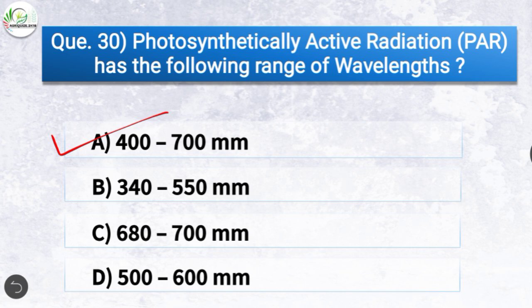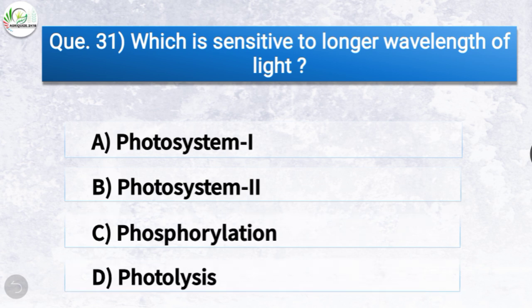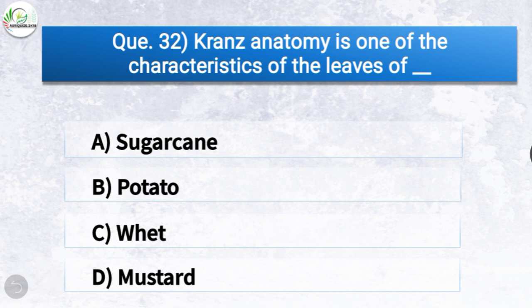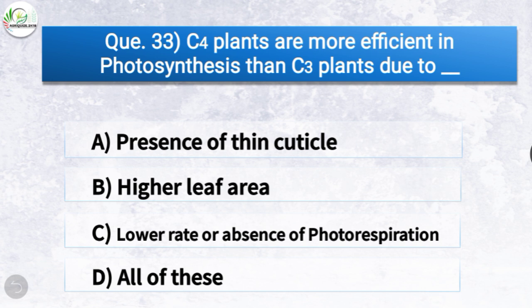Question 31: Which is sensitive to longer wavelength of light? Options: photosystem 1, photosystem 2, phosphorylation, or photolysis. The correct answer is option A — photosystem 1. Question 32: Kranz anatomy is one of the characteristics of the leaves of what? Options: sugarcane, potato, wheat, or mustard. The correct answer is option A — sugarcane. Question 33: C4 plants are more efficient in photosynthesis than C3 plants due to the lower rate or absence of photorespiration.